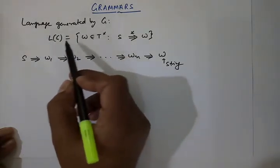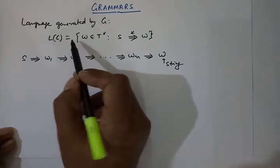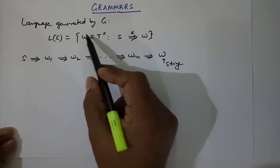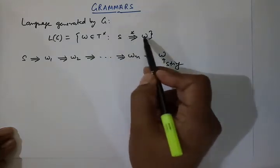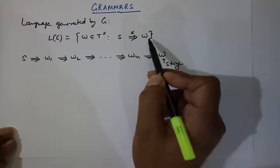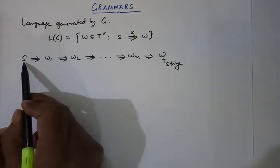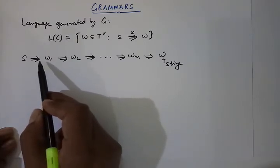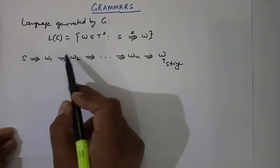The language generated by grammar G can be defined as L(G) — L for language — equal to the set of strings W belonging to T* such that S derives W in zero or more steps. Starting from the start symbol S, we apply any production rule one time to get W1.